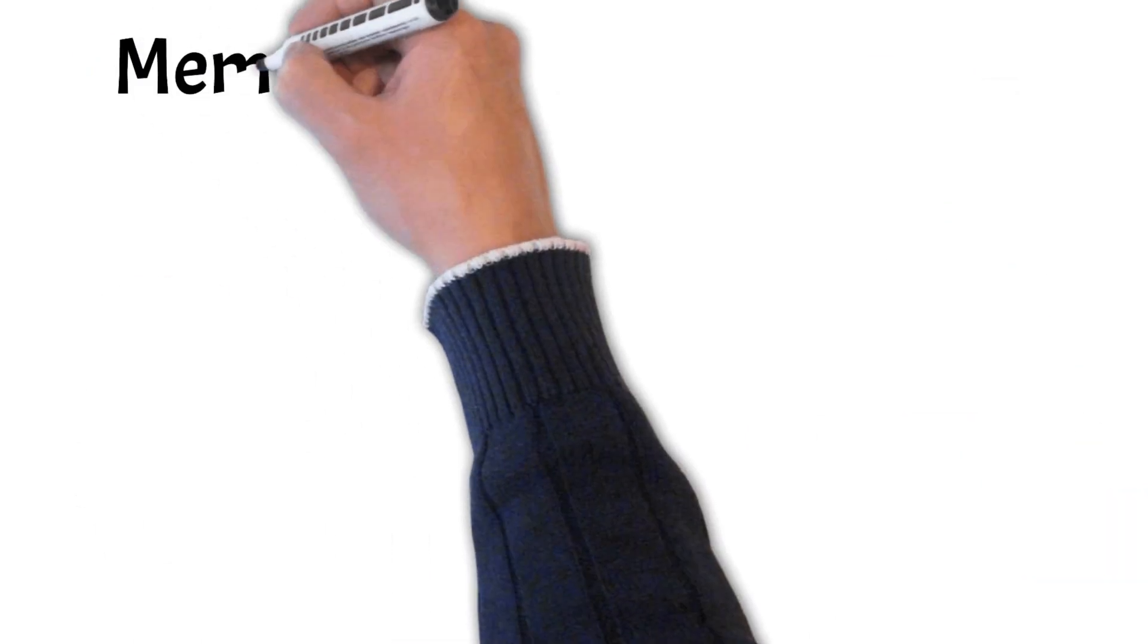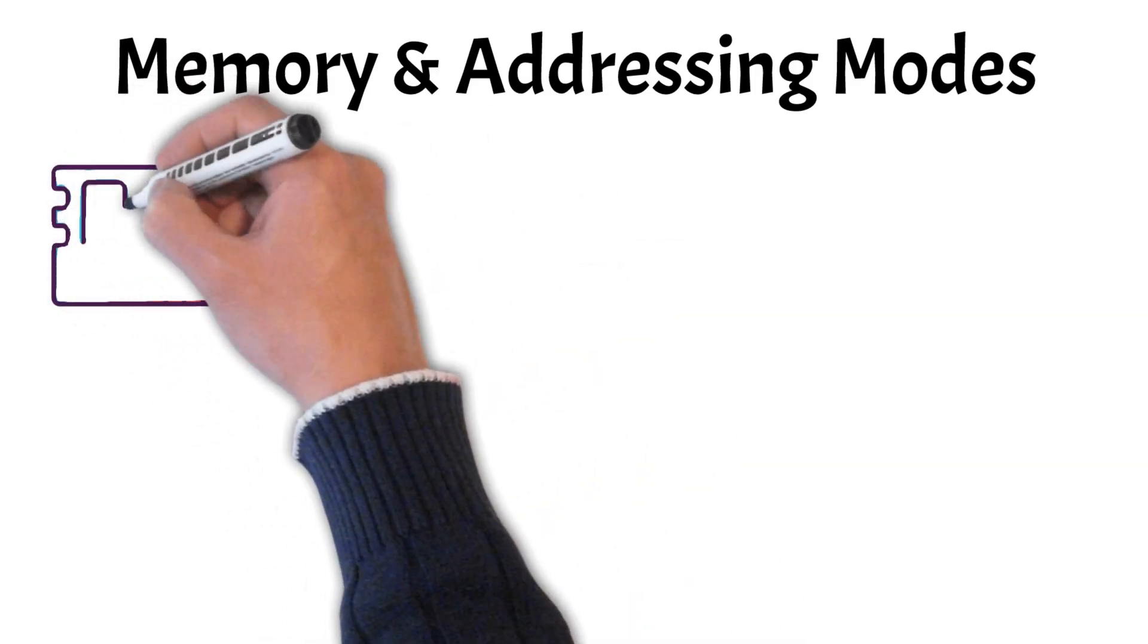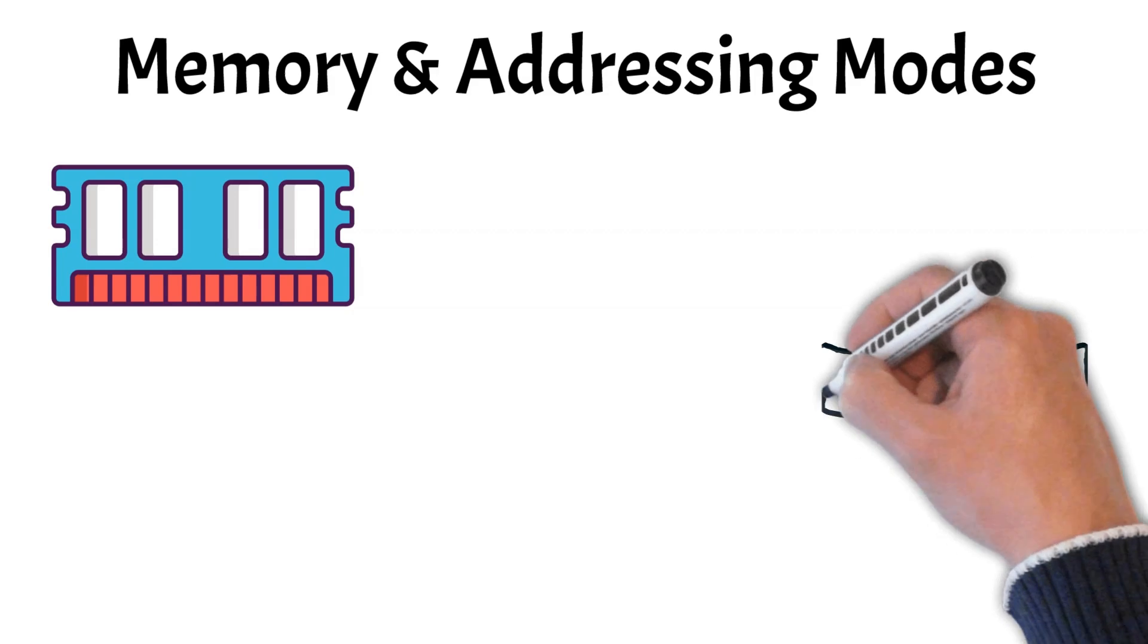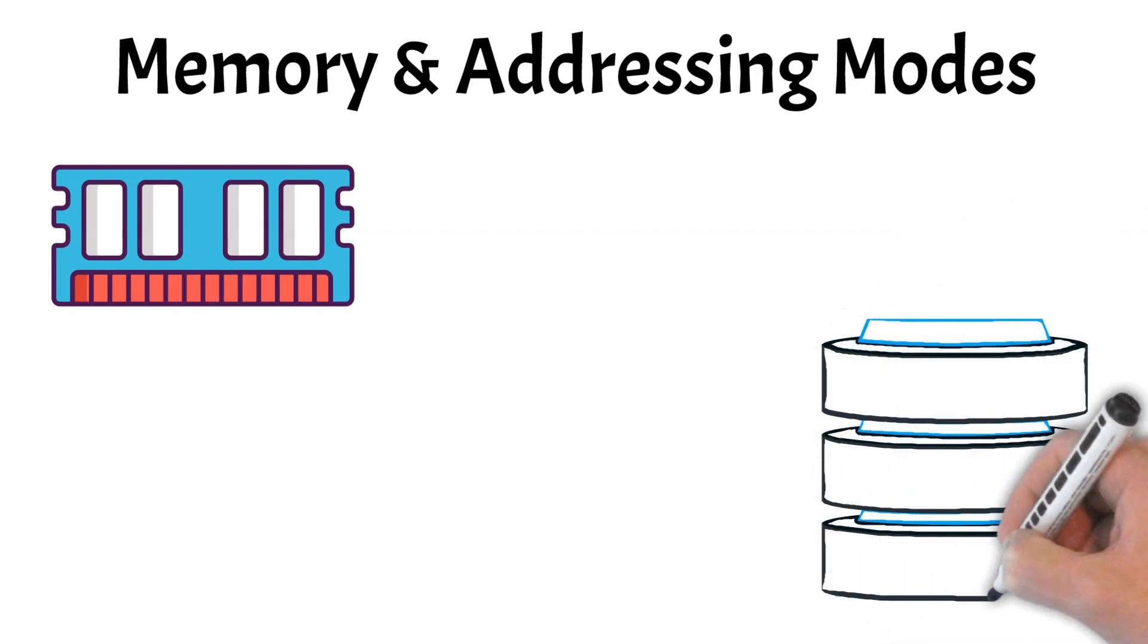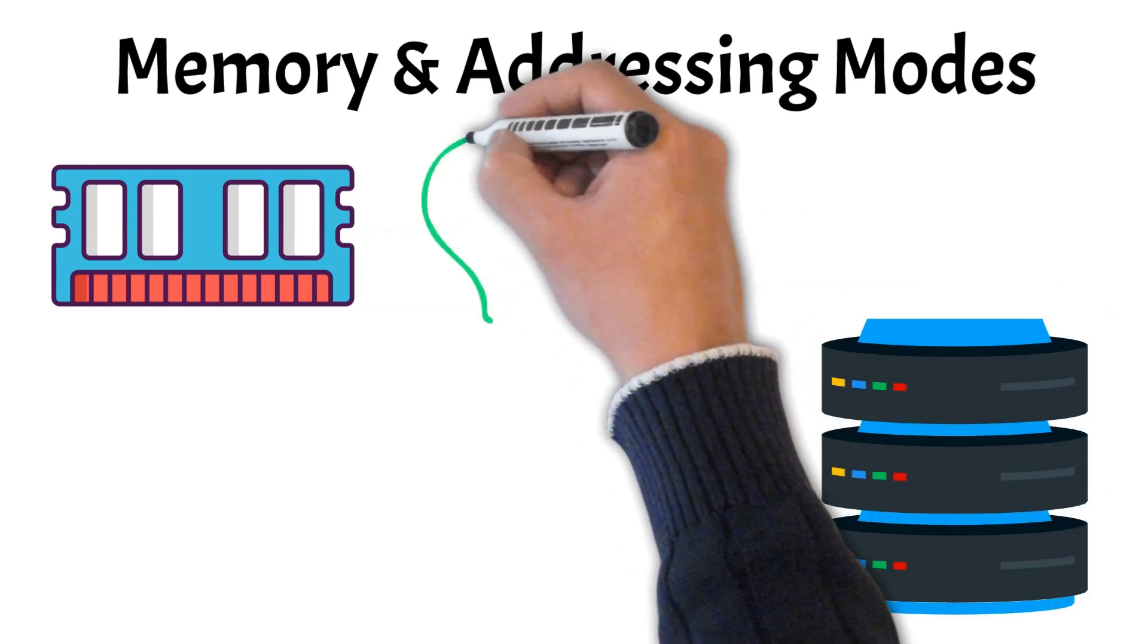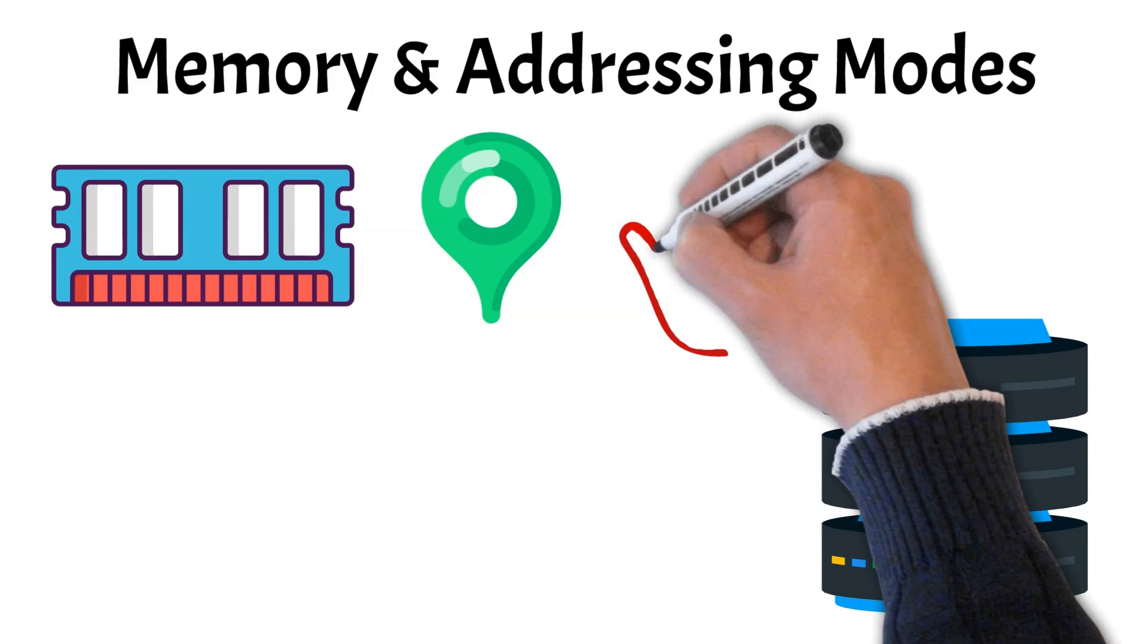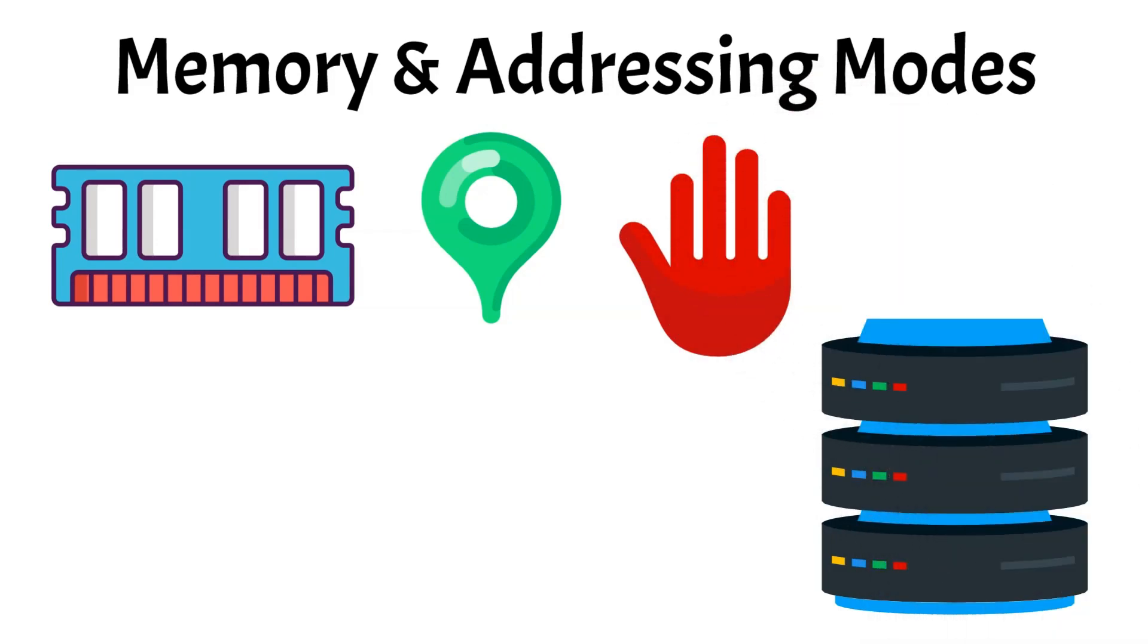Now, let's discuss memory and addressing modes. Memory and addressing modes are key concepts in assembly language that help us understand how data is stored and accessed in a computer's memory. Memory refers to the physical locations where data is kept, allowing programs to retrieve and manipulate information. Addressing modes define the different ways we can access this memory, determining how the CPU interprets the addresses and instructions.